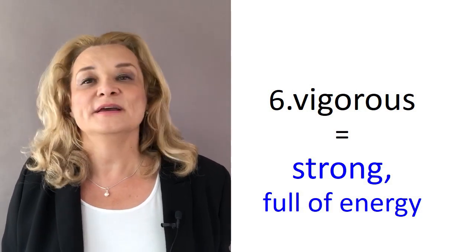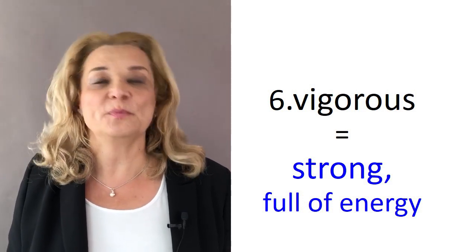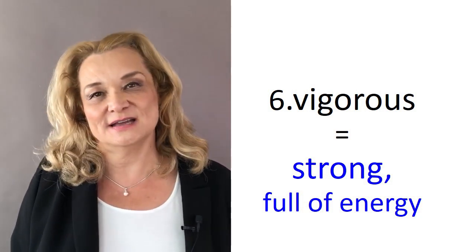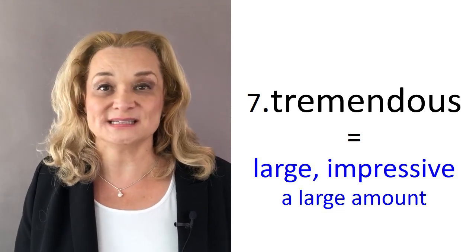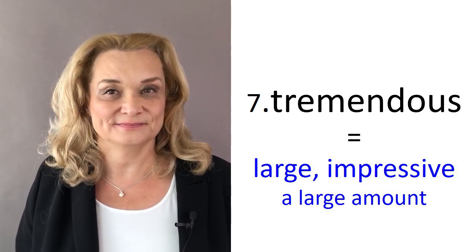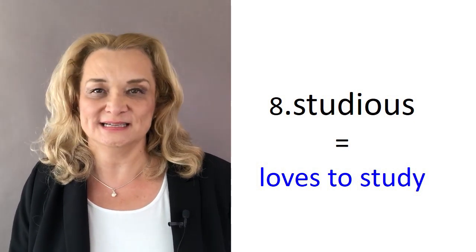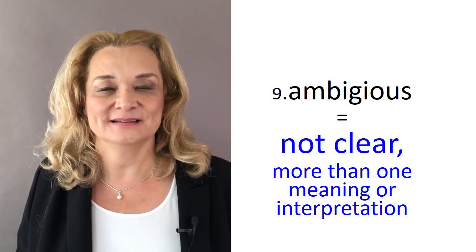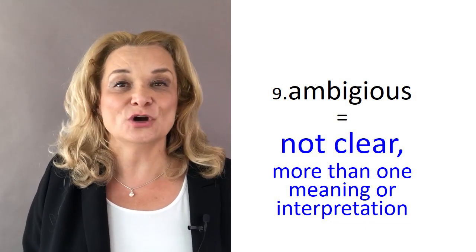Number six: vigorous. Vigorous means very strong and very energetic, full of energy. Vigorous people have a lot of strength, and sometimes you can do vigorous exercise, which is challenging, difficult exercise. Number seven: tremendous. Tremendous means very large, very impressive, excellent — but it can also mean when there is a lot of something. Number eight: studious. A studious person loves to study — they're always studying and reading books. Number nine: ambiguous. Ambiguous means not clear, or maybe there are two ways to look at something so you don't know which one is correct.